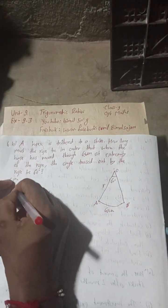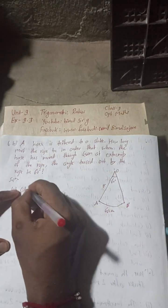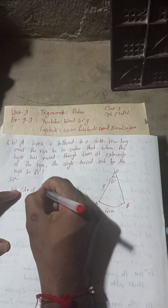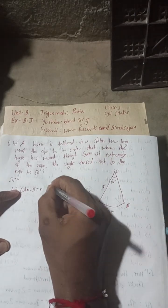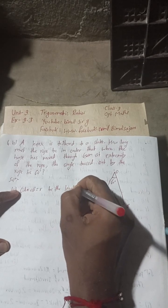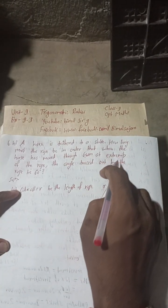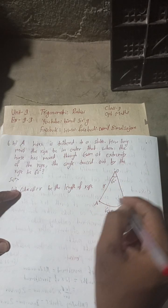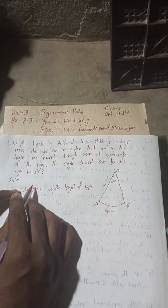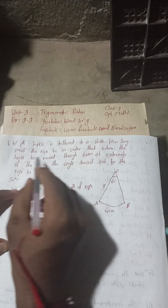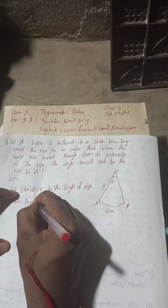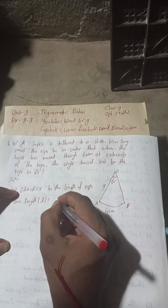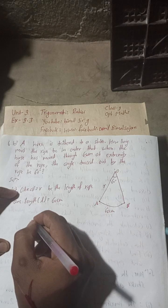Let OA equal to OB equal to R be the length of the rope. Arc length, indicated by L, is equal to 60 cm. The angle at center, theta, is equal to 60 degrees given.